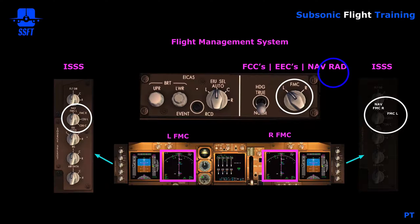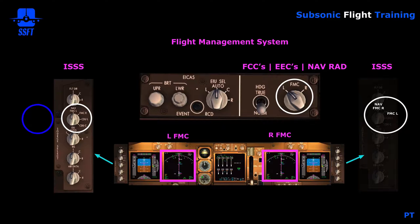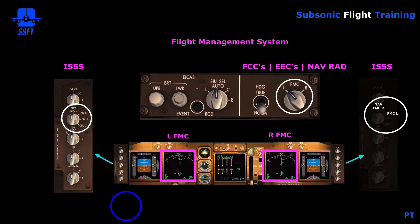We also have instrument source select switches that control which information is displayed on the captain's or first officer's ND — the NAV instrument source select switch. Normally the captain is on left FMC and the first officer is on right FMC. We have the ability to switch to a different flight management computer if one were to fail. If both fail, we go into what's called alternate navigation — it used to be called standby navigation — and that's when we use the CDU position of the switch. More on that will be covered later in the training series. When all switches are in the 12 o'clock position, the NAV switch will be FMC left for the captain and FMC right for the first officer.